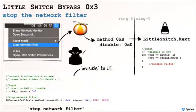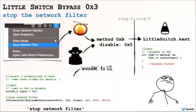Another way to bypass Little Snitch is to simply turn it off. I reverse engineered what happens when the user clicks on 'stop network filter.' Basically, the user mode component of the firewall connects and authenticates to the kernel component, and once it's connected and authenticated, it simply invokes method B. Method B takes a single parameter — a zero to turn off the firewall, or a one to turn it on — so we can write our own code to do this ourselves. The best part about this bypass is it's invisible to the UI. So if malware invokes method B with a zero to turn off the firewall, and the user looks at the status of the firewall, it'll still show that it's on.